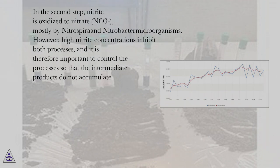In the second step, nitrite is oxidized to nitrate (NO3), mostly by Nitrospira and Nitrobacter microorganisms. However, high nitrite concentrations inhibit both processes, and it is therefore important to control the processes so that the intermediate products do not accumulate.